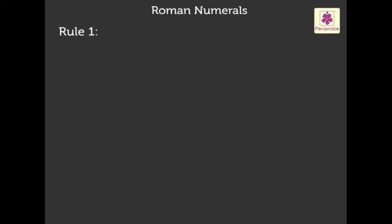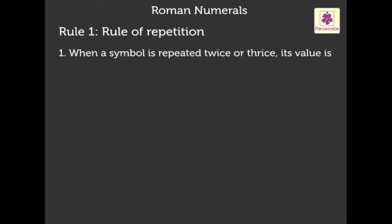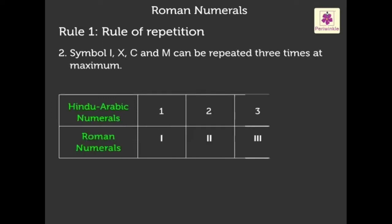Now understand the rules for Roman numerals. Rule one: Rule of repetition. When a symbol is repeated twice or thrice, its value is multiplied by 2 or 3 respectively. Symbols I, X, C, and M can be repeated three times at maximum. For one we write I, for two we write II, for three we write III, but we never write IIII to represent four—it will be wrong.